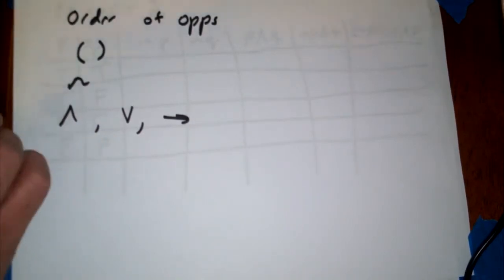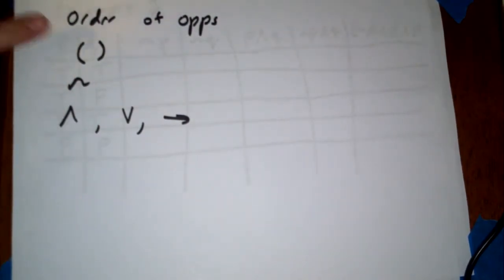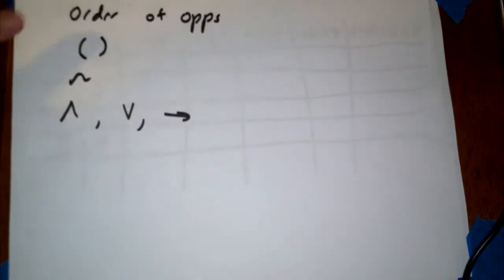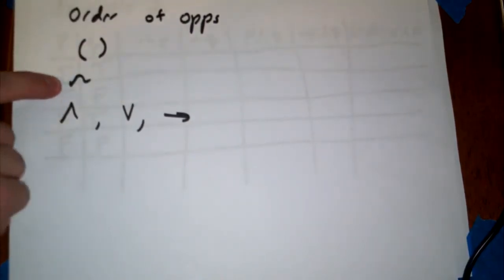But today we're going to talk about order of operations of handling these gates. So when we're talking about what we should look at when we're trying to figure out a gate, we can start with different types of orders. Just like in PEMDAS, we start with our parentheses first and then our NOT and then we do our ANDs, ORs, or THENs in order to complete the statement.